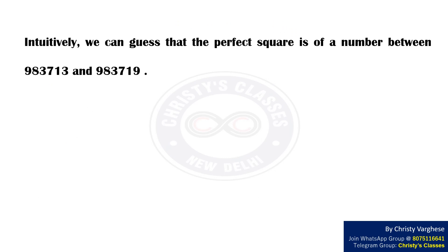Intuitively, we can guess that the perfect square is of a number between 983713 and 983719. By trial and error, we can obtain that 983716² is the perfect square.